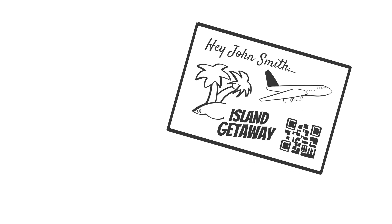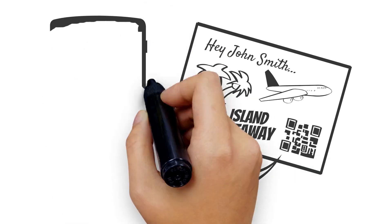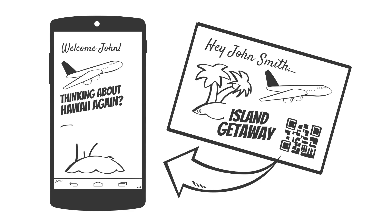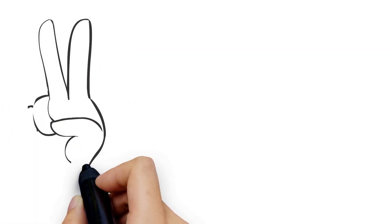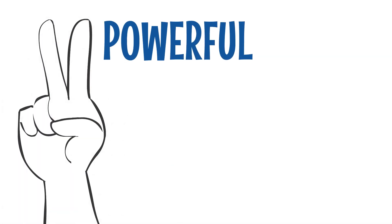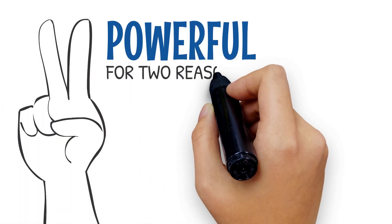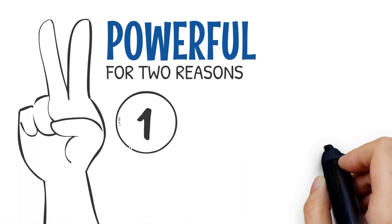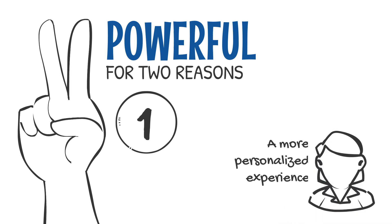QR codes work the same way, but rather than having to manually type a PURL, the recipient can simply scan it with their smartphone and they're taken to their dedicated site. PURLs and QR codes are powerful for two reasons. One: they provide a more personalized experience for the recipient.